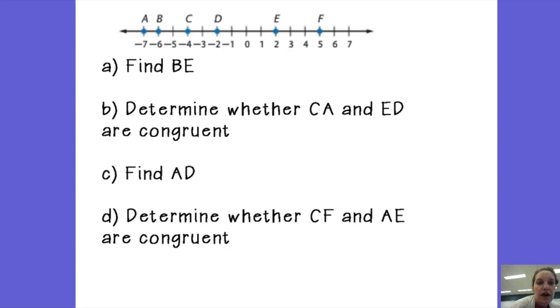This first question asks us to find the length of BE. So I know that B is at negative 6 and E is at 2. So I can either count the number of spaces in between B and E. One, two, three, four, five, six, seven, eight.